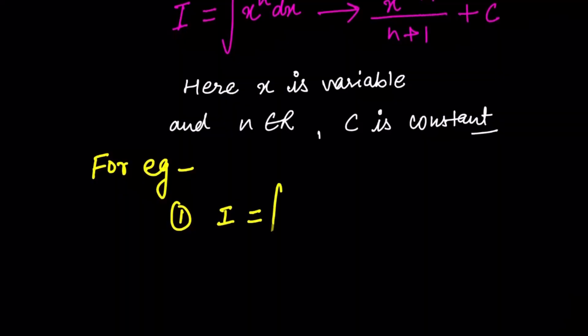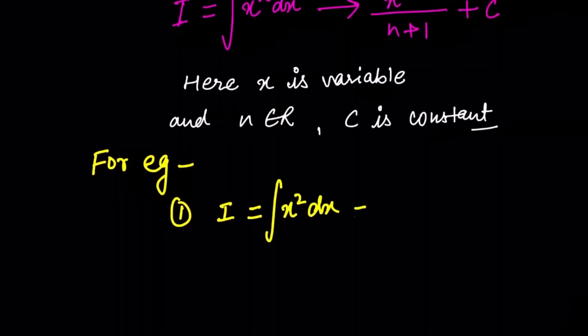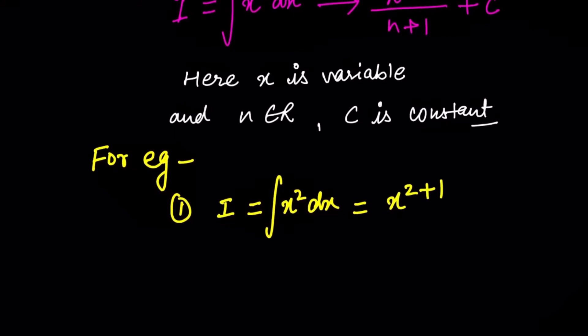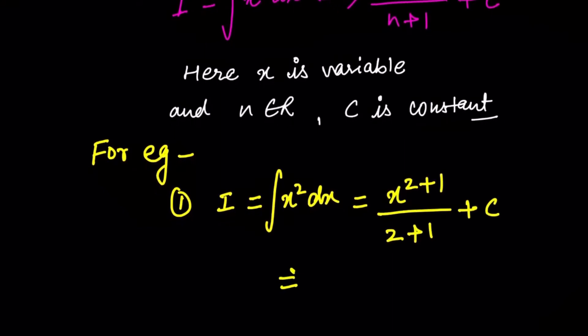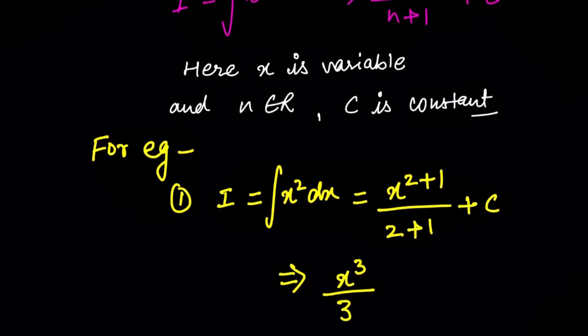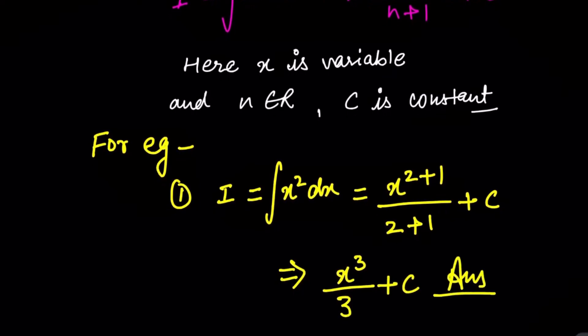So the integration of x² using this formula gives us x^(2+1) / (2+1) + C, that means x³/3 + C.